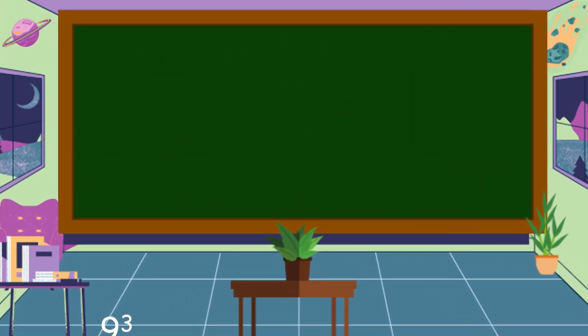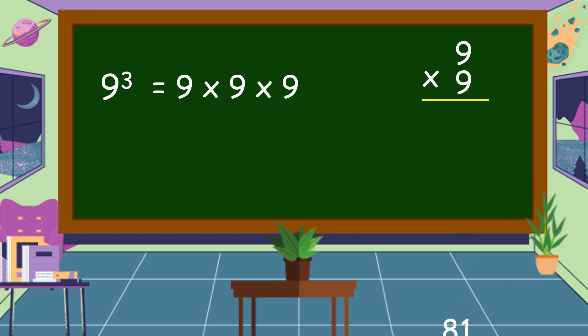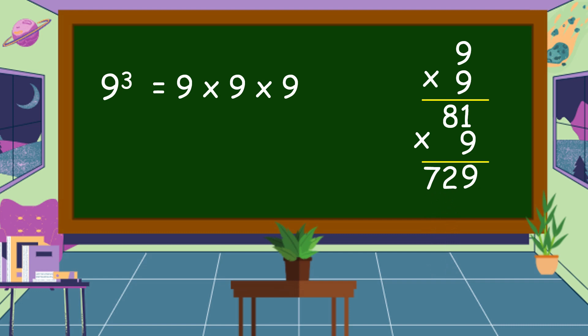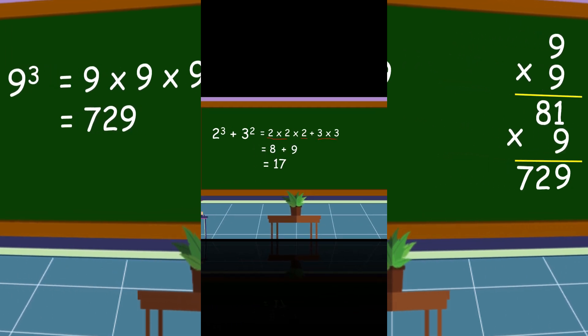Another example: 9 cubed. This is 9 times 9 times 9. So let's multiply. 9 times 9 is equal to 81. Then we're going to multiply 9 again. 9 times 1 is equal to 9. 9 times 8 is equal to 72. So 81 times 9 is equal to 729. Therefore, 9 cubed is equal to 729.